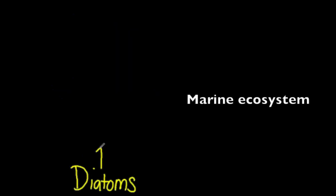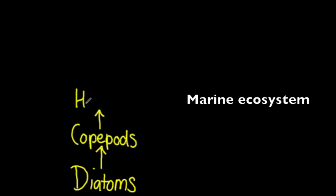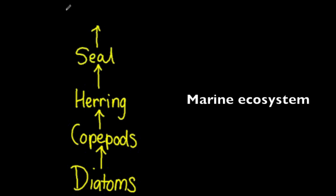In our final example we represent a marine ecosystem where diatoms, which are tiny plants, are eaten by copepods. These are eaten by herring, which are then eaten by seals, and finally the seals are eaten by great white sharks.